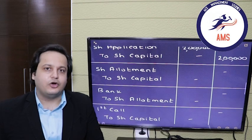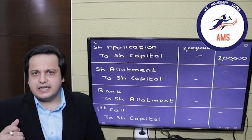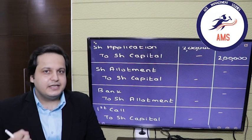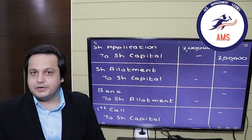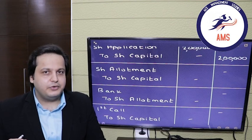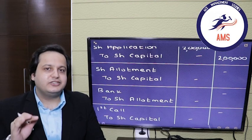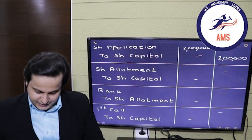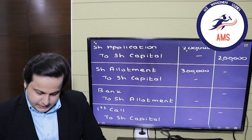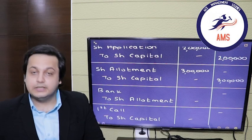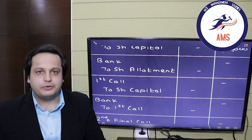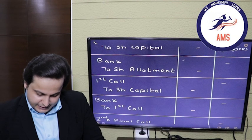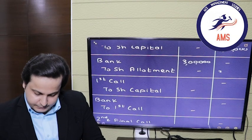Let's move forward with allotment. A trend starts with the allotment: firstly, you capitalize the installment — make it due — and then you pass the entry for receiving the payments. To capitalize the allotment, the entry is: share allotment account debit to share capital — 1 lakh shares multiplied by 3 rupees equals 3 lakh rupees. Since there was no default in the allotment, we receive the full amount: bank account debit to share allotment — 3 lakh rupees each side.